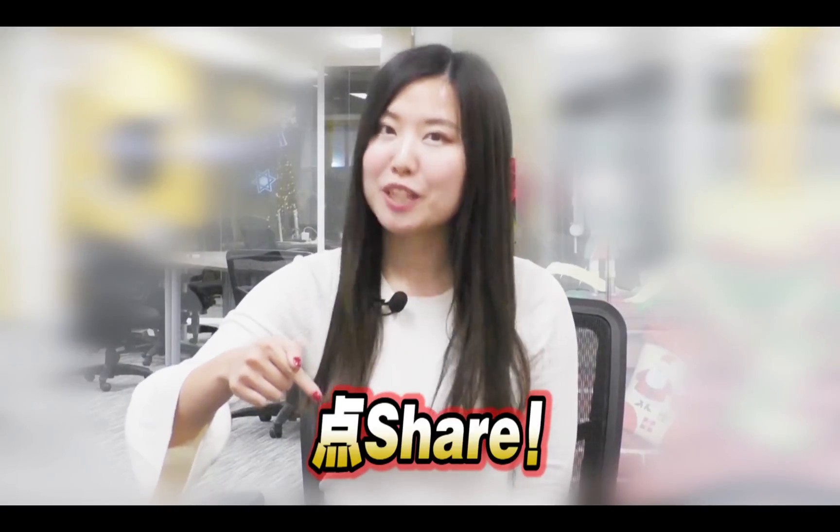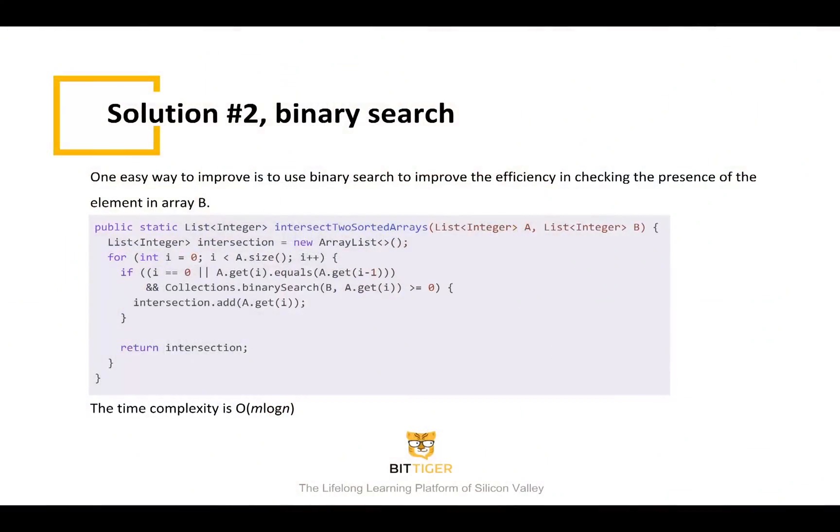In the first solution, for one element in array A, we need to check if it is present in array B by traversing the whole array, which has a time complexity of big O of N. Given the fact that array B is sorted, can we do better here? One improvement we can think of is to use binary search in this step, since we know binary search is a much better algorithm to locate one element in a sorted array.